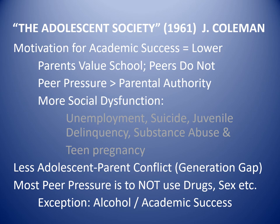Coleman said this leads to more social dysfunction — higher teenage unemployment, growing teenage suicide rates, juvenile delinquency, substance abuse, and rising teen pregnancy rates — all of which were rising as he wrote in the 1950s to 1970s. However, what was found over a longer period of time is that there is less adolescent-parent conflict than theories like this suggest. There may have been a generation gap in the 1960s and 70s, but for the most part that generation gap has disappeared. Most teenagers agree with their parents, and peer pressure is not necessarily contrary to parental authority — in many cases it supports it.